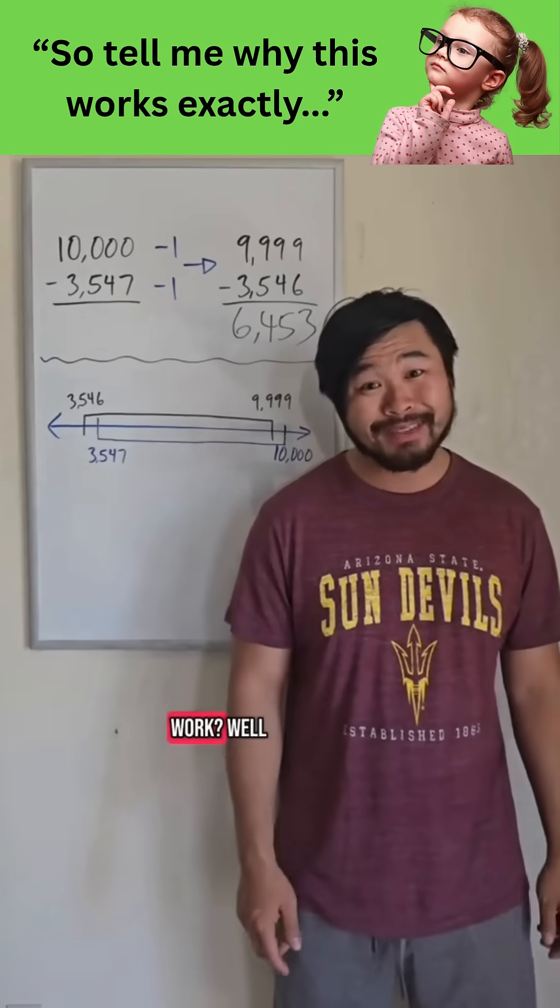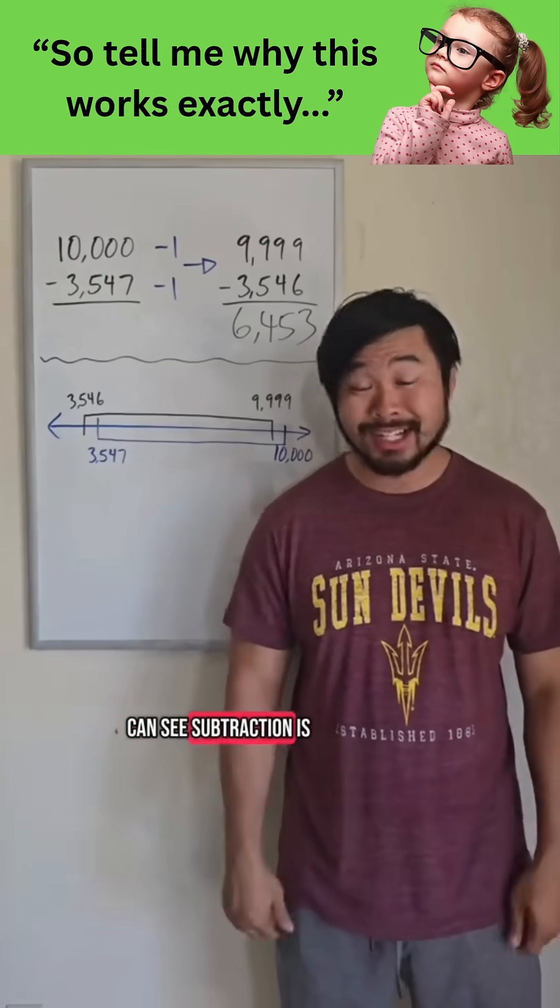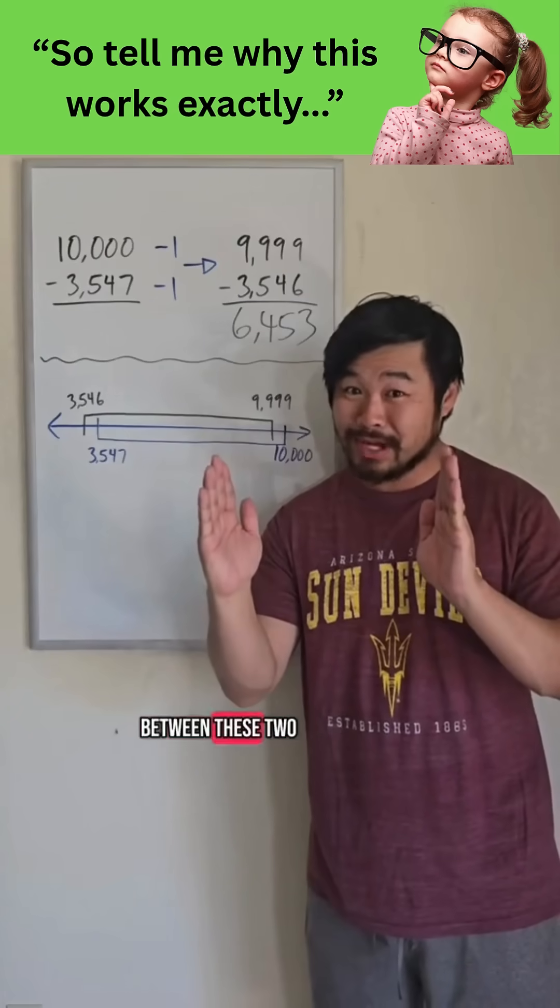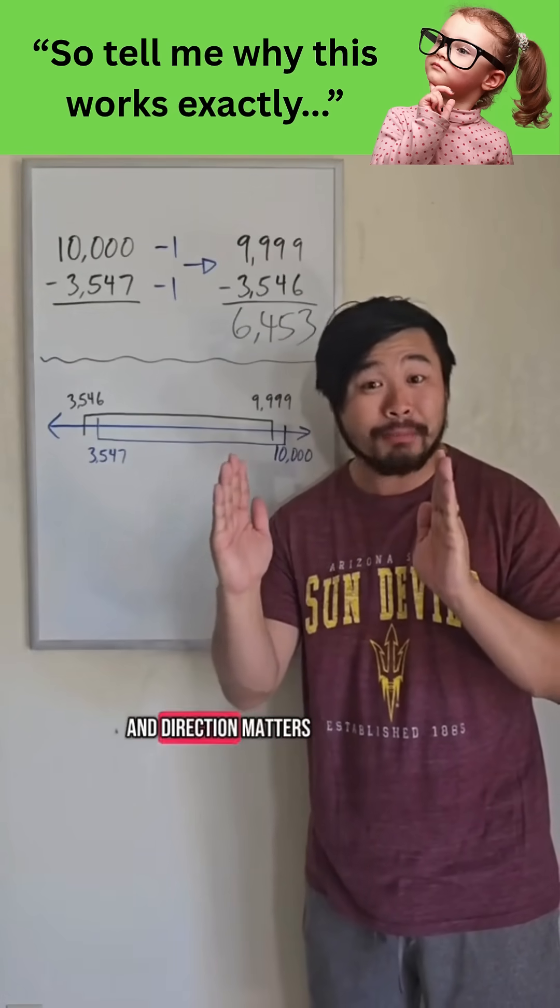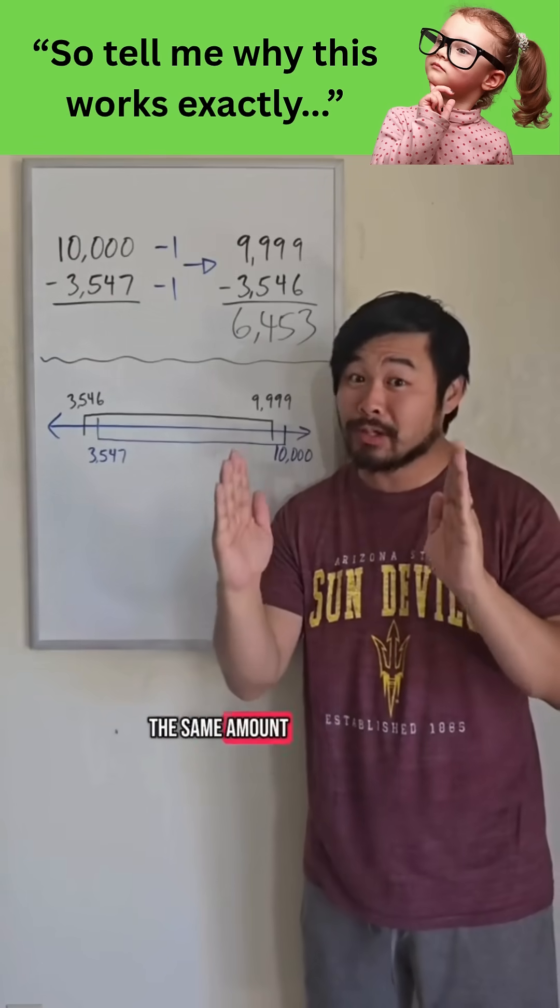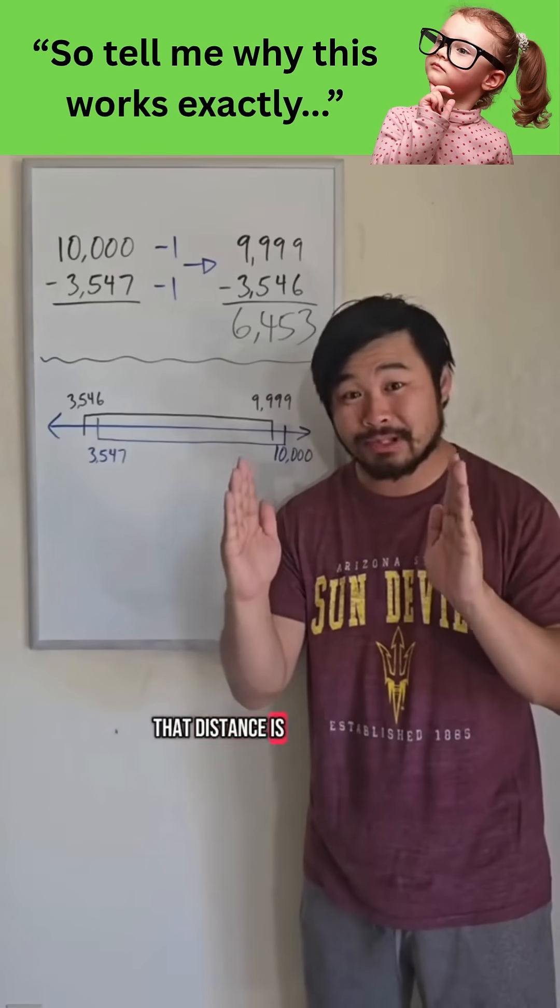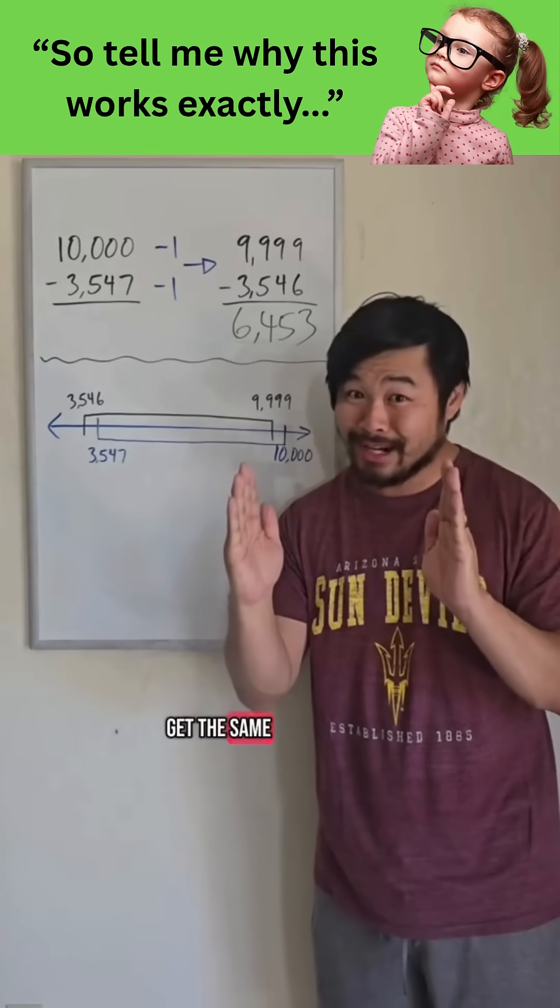Now of course, why does this work? Well, one way we can see subtraction is what's the distance between these two numbers on the number line, and direction matters. So if we add or subtract the same amount to both numbers, that distance is preserved, meaning we will get the same final answer.